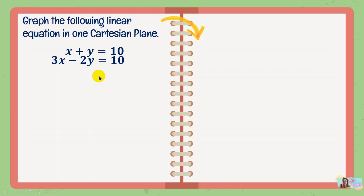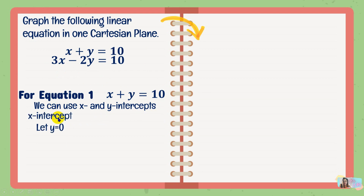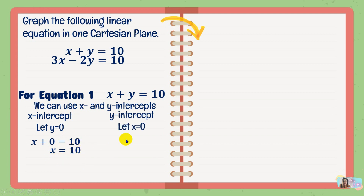Let's have these first two linear equations and we're going to graph these in one Cartesian plane only. For the first linear equation, x plus y equals 10, we can use the x and y intercepts. To find the x-intercept, we let y equal 0. If y is 0, x equals 10, so the x-intercept is 10 and we plot that on the x-axis at positive 10. For the y-intercept, we let x equal 0, so 0 plus y equals 10, and y equals 10. The y-intercept is 10, plotted at positive 10 on the y-axis.